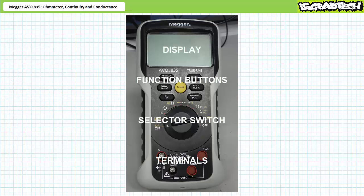The AVO835 features a backlit display, function buttons, a rotating function dial, and selectively accessible terminals based upon the chosen function.